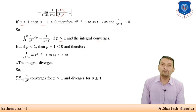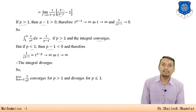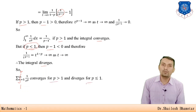For the case p < 1, we have p−1 < 0, so 1/t^(p−1) = t^(1−p) → ∞ as t → ∞. Therefore the integral diverges. In summary, ∫₁^∞ 1/xᵖ dx converges for p > 1 and diverges for p ≤ 1.